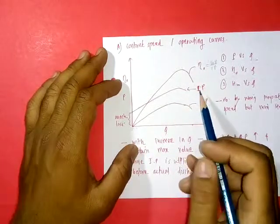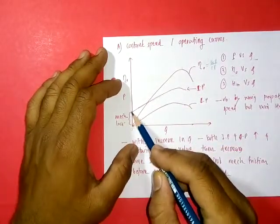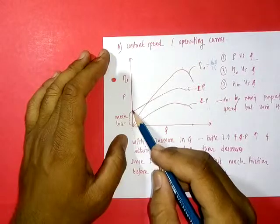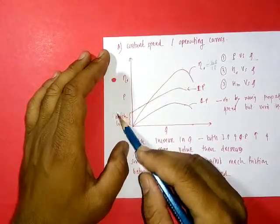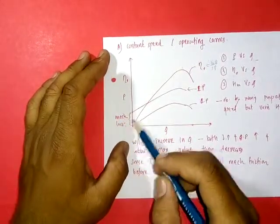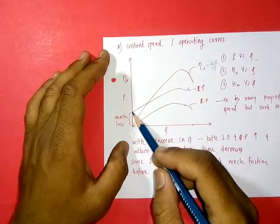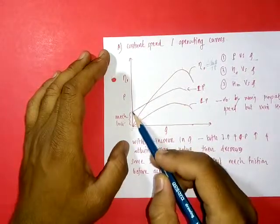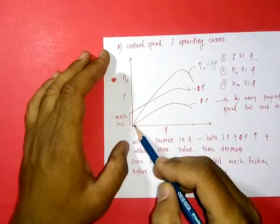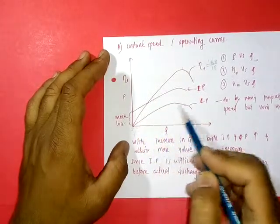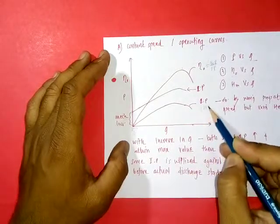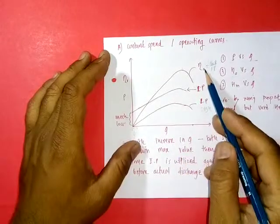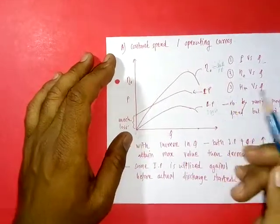This initial input power at zero discharge is utilized against mechanical losses within the pump. After the pump overcomes those mechanical losses, with increasing input power, discharge starts. With starting discharge we get output power, which is the water power at the outlet, and once output power is nonzero, the overall efficiency begins.